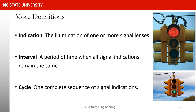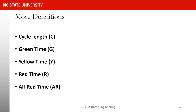For example, in the signal head shown here, if green starts at t equals zero and stays green for 50 seconds, then turns yellow for 5 seconds, then turns red for 20 seconds — after 75 seconds (50 + 5 + 20) we see green again. That complete sequence is defined as a cycle, and that 75 seconds is defined as the cycle length. We use capital C for cycle length, capital G for green time, capital Y for yellow time, capital R for red time, and AR for all-red time.